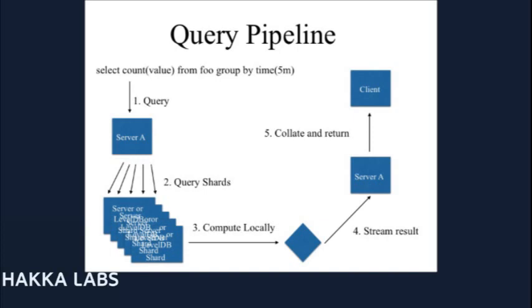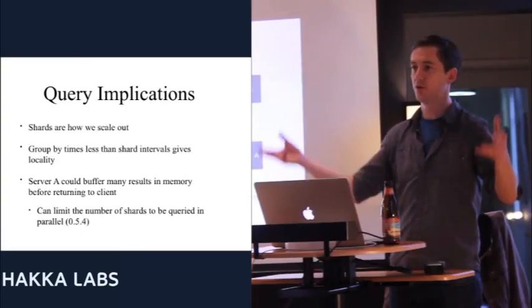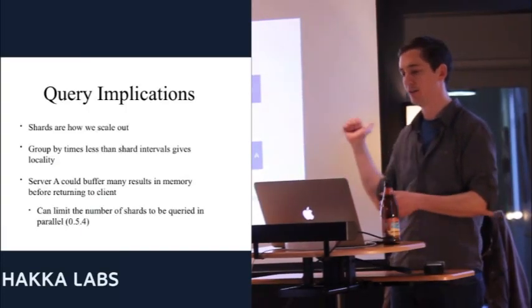Consider this query: select count of values from foo, grouped by five-minute intervals. Without a specified time, we have to hit every single shard in the database. The shards can live on multiple servers, so server A — which gets the query — distributes it to all the shards. At the shard level, it computes the value locally: it runs through the raw points, computes the count, and sends the single tick for the five-minute interval back to server A. Those results get streamed back, collated into the right time order, and returned to the client.